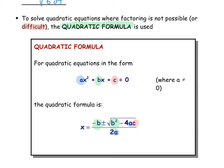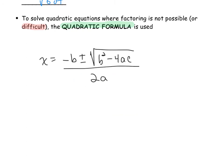I want to talk briefly about this business of plus or minus. The plus or minus comes in advance of the square root because any time we're taking the square root of a value, there are actually two different possibilities. For example, the square root of 9: one possible answer is 3, because 3 times 3 gives 9. But we also need to remember that negative 3 times negative 3 also gives us 9.